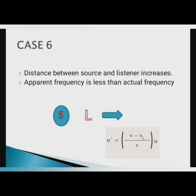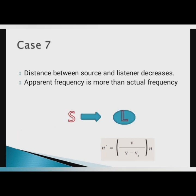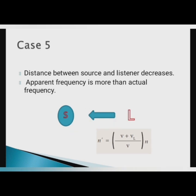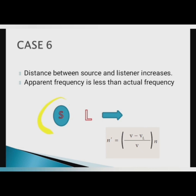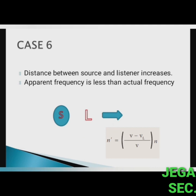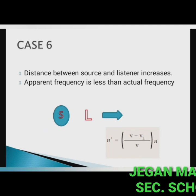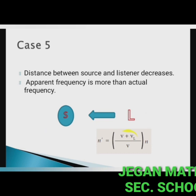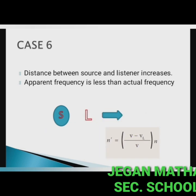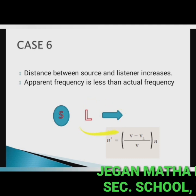Case 6 — source at rest, listener moves away from the source. The distance between source and listener increases, so the apparent frequency is less than the actual frequency. Since the source is at rest, Vs = 0, and by changing the sign of Vl the expression becomes: n' = (V − Vl) / V × n.